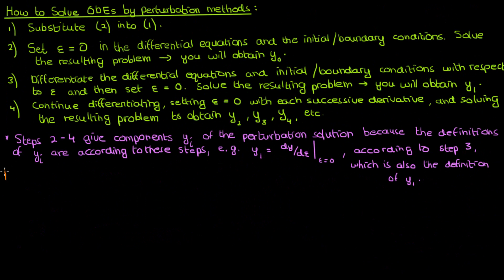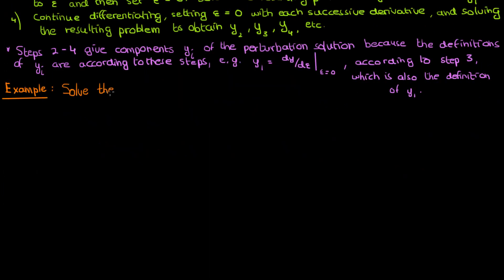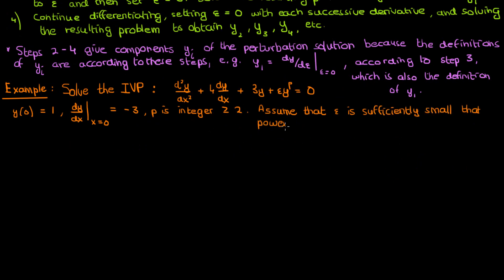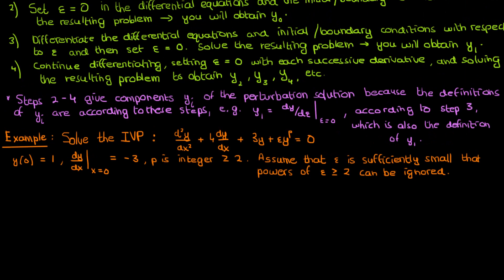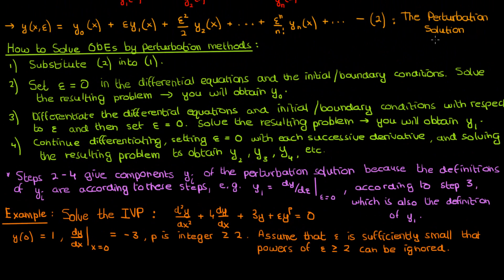Anyway, enough of this theoretical stuff. Let's do an actual example problem. Our goal is to solve this initial value problem consisting of a second-order differential equation, its two initial conditions, and a nonlinear term epsilon times y to the power p, where p is some integer greater than or equal to 2. The question also says to assume that epsilon is sufficiently small that powers of epsilon greater than or equal to 2 can be ignored.